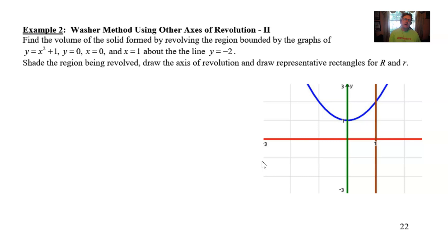And again, I've already taken the time to graph these functions and the relations, so that we don't have to spend time with that. So the problem reads, find the volume of the solid formed by revolving the region bounded by the graphs y equals x squared plus 1, y equals 0, x equals 0, and x equals 1, this time about the line y equals negative 2.